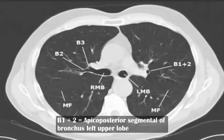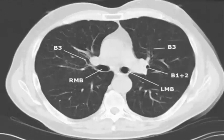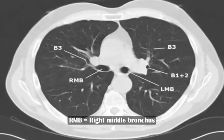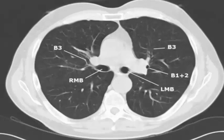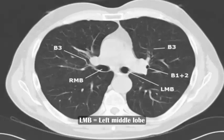B1+2 Apical Posterior Segment of Bronchus Left Upper Lobe, LMB Left Middle Bronchus, B3 Anterior Segment of Bronchus Right Upper Lobe, RMB Right Middle Bronchus, B3 Anterior Segment of Bronchus Left Upper Lobe, B1+2 Apical Posterior Segment of Bronchus Left Upper Lobe, LMB Left Middle Bronchus.